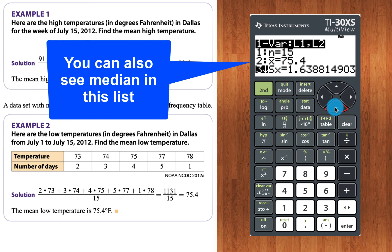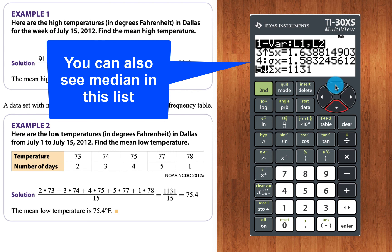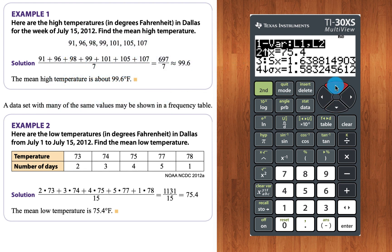And if we arrow down here, there are some more sophisticated statistics. This stands for standard deviation and sum and so forth. And that's a different lesson for a different day. But there you go. So that's how to use the TI-30XS for computing some simple statistics.